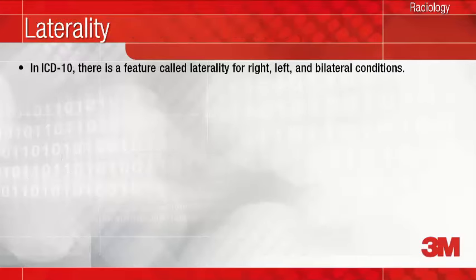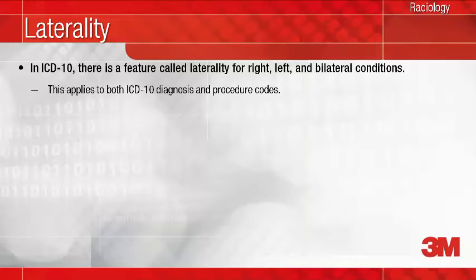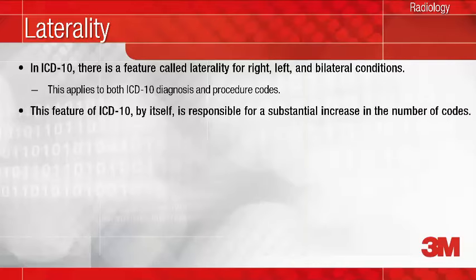In ICD-10, there is a feature called laterality — for right, left, and bilateral — which is found in many diagnoses and procedure codes involving paired organs, or those codes specific to one side of the body versus the other, for example, inguinal hernia. This feature of ICD-10 by itself is responsible for a substantial increase in the number of codes, which you have probably heard so much about.